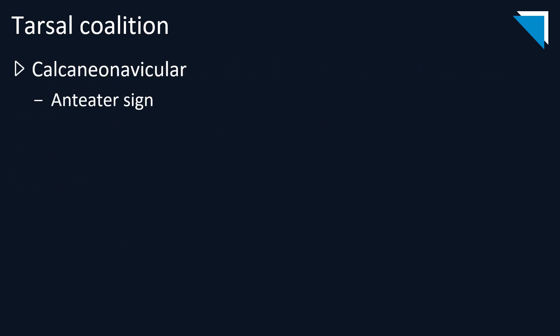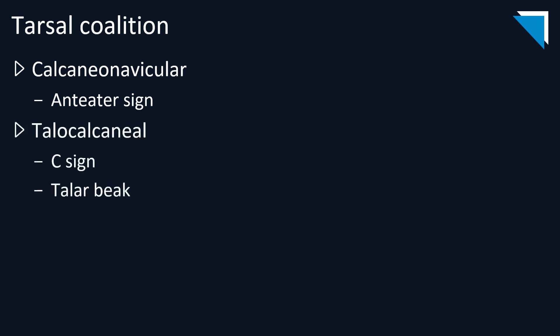The most common types of tarsal coalition are calcaneonavicular coalition, which gives rise to the anteater sign on plain radiographs — the elongated anterior process of the calcaneus — and talocalcaneal coalition, which gives rise to the C-sign and the classic talar beak on lateral radiographs. The C-sign results from bridging between the sustentaculum tali and the medial talar dome, and the talar beak arises due to altered biomechanics from the coalition.